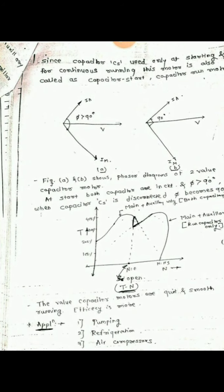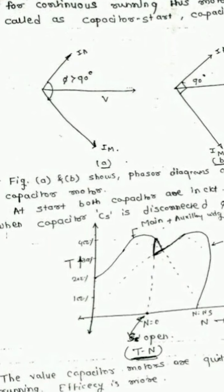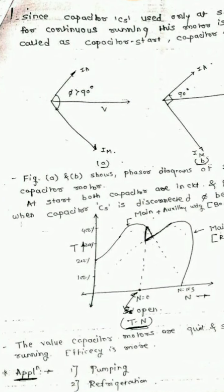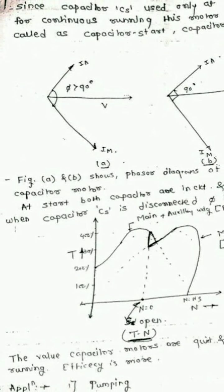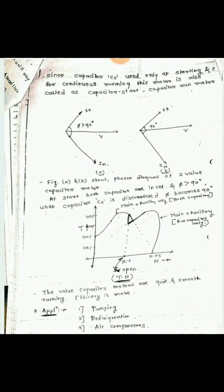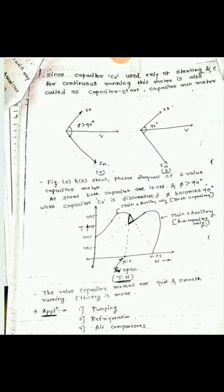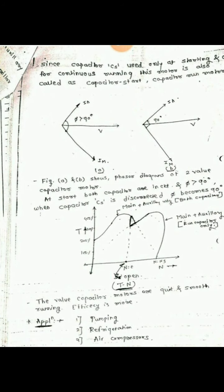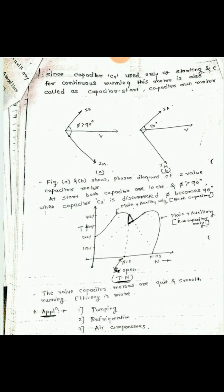This is the phasor diagram of the capacitor start and capacitor run induction motor. In the first phasor diagram, V is the supply voltage, Ia is the current in the auxiliary winding, and Im is the current in the main winding. The angle between them is less than 90 degrees, approximately 80 degrees, which gives high starting torque. In the second phasor diagram, the phase angle between the auxiliary winding and main winding is 90 degrees. At starting, both capacitors are in the circuit; when the phase angle exceeds 90 degrees, capacitor C1 (CS) is disconnected and the angle becomes 90 degrees.